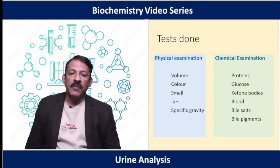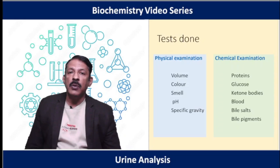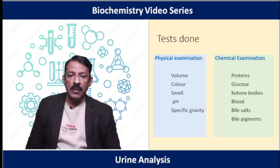The tests done in urine examination include physical and chemical examinations. In physical examination, we look at the volume of urine voided — preferably over 24-hour collection — the color, smell, pH, and specific gravity. Each of these has characteristic changes that serve as signatures for diseases. In chemical examination, we check for proteins, glucose, ketone bodies, blood, bile salts, and bile pigments.